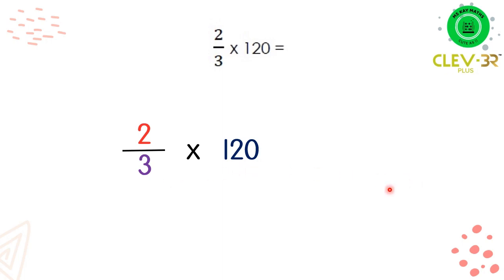So 3 divided by 3, we have 1. And 120 divided by 3, we have 40.